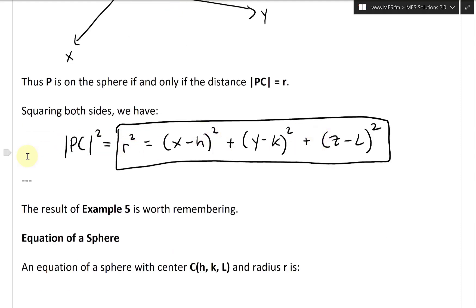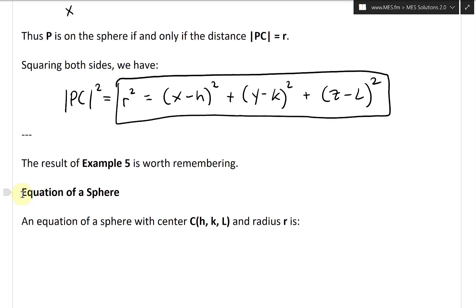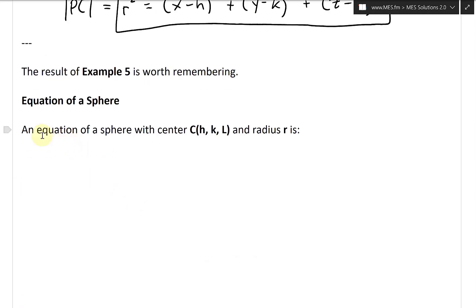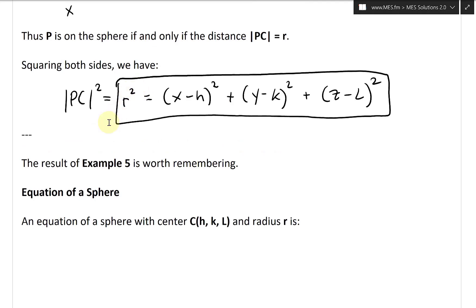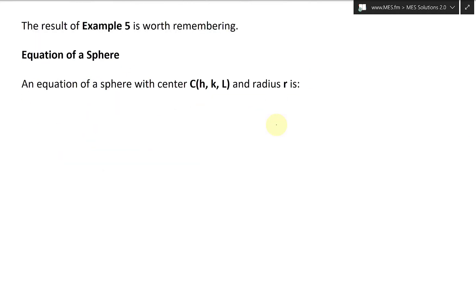Alright, so now that we have this, basically this result of example 5 is worth remembering, so we'll call this equation of a sphere. An equation of a sphere with center C(H, K, L) and radius R is: (X minus H) squared plus (Y minus K) squared plus (Z minus L) squared equals R squared.